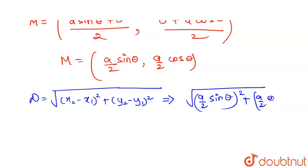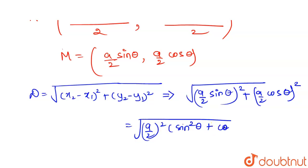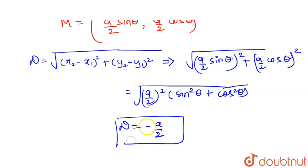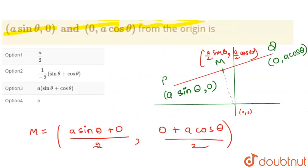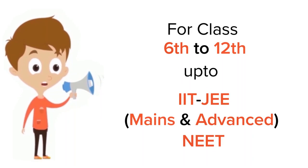Taking (a/2)² common, we get √[(a/2)² (sin²θ + cos²θ)]. Since sin²θ + cos²θ = 1, the distance simplifies to a/2. So the answer is a/2, which is option one.